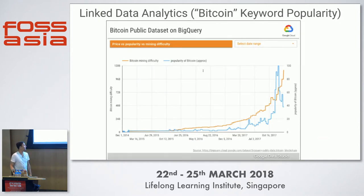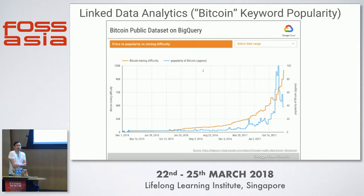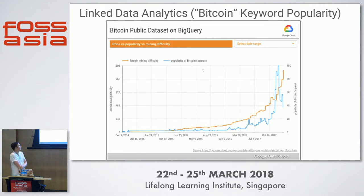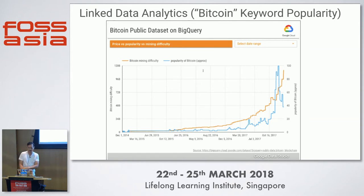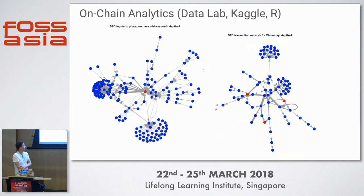Here's an example of joining the Bitcoin dataset with other data. The mining difficulty is shown in orange — an indirect measure of the price of Bitcoin in dollars. In blue we have a popularity metric for the keyword 'Bitcoin.' This figure is a bit outdated but you might draw conclusions about how popularity may be an indicator of difficulty or other attributes of the network.